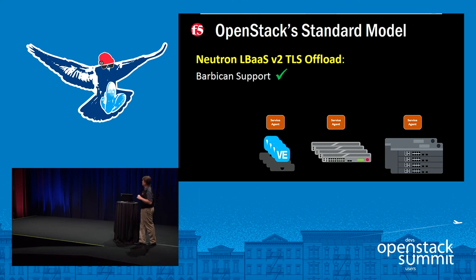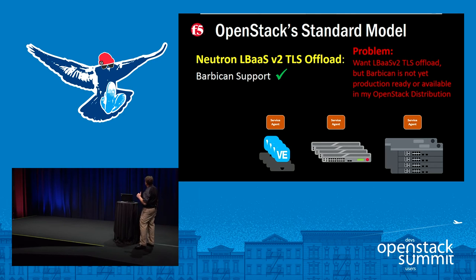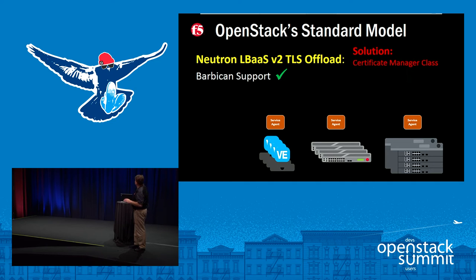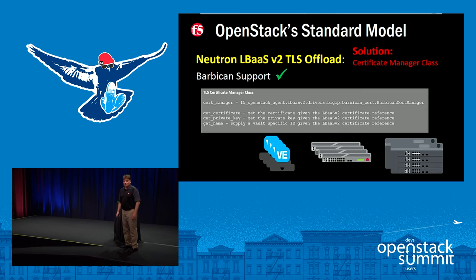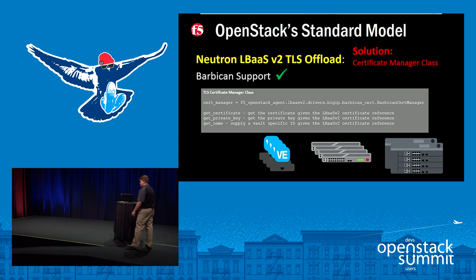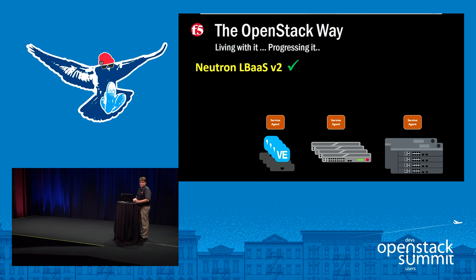We've got LBaS V2, TLS offload, and that came with Barbican. How many love Barbican? How many have implemented it? Okay, all the hands stayed down. What do you do when Barbican is not production-ready according to you, or it's not available in your distribution? You'd want a vendor to do LBaS V2 in an OpenStack way — because that means we're going to make that pluggable too. If you have some better way to do certificate management, or some homegrown certificate management that meets your security compliance and regulations, you can still do LBaS V2 with your own certificate manager, because we follow the standard model for using plugins.